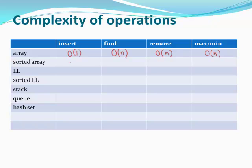For a sorted array, insertion still requires O(n) since you must maintain the sorted order. Finding can be done in O(log n) using binary search. Removing requires O(n) since you must find the element and adjust the array to maintain the sorted invariant. Max and min are at the ends of the array, so they can be found in O(1).